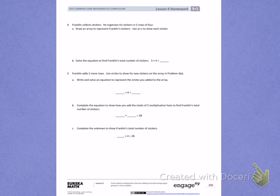Number 4. Franklin collects stickers. He organizes his stickers in 5 rows of 4. So right there is some important information - 5 rows of 4. Draw an array to represent Franklin's stickers. Use an X to show each sticker.